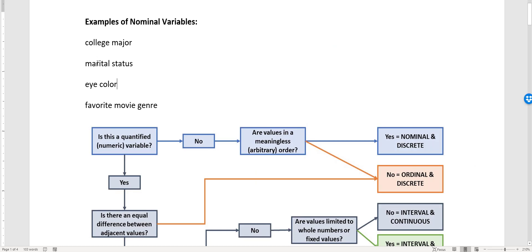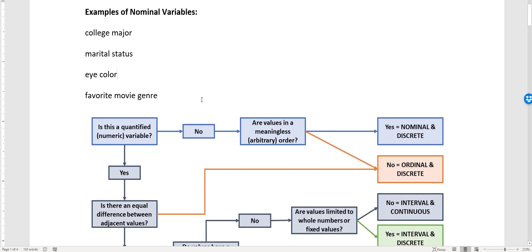You see we have college major, marital status, eye color, and favorite movie genre. Remember, nominal variables are categorical. They aren't really numerical at all. They're not quantitative and you can't really put any kind of values for these variables in any meaningful order. But let's use the flowchart to confirm that they are, in fact, nominal variables.